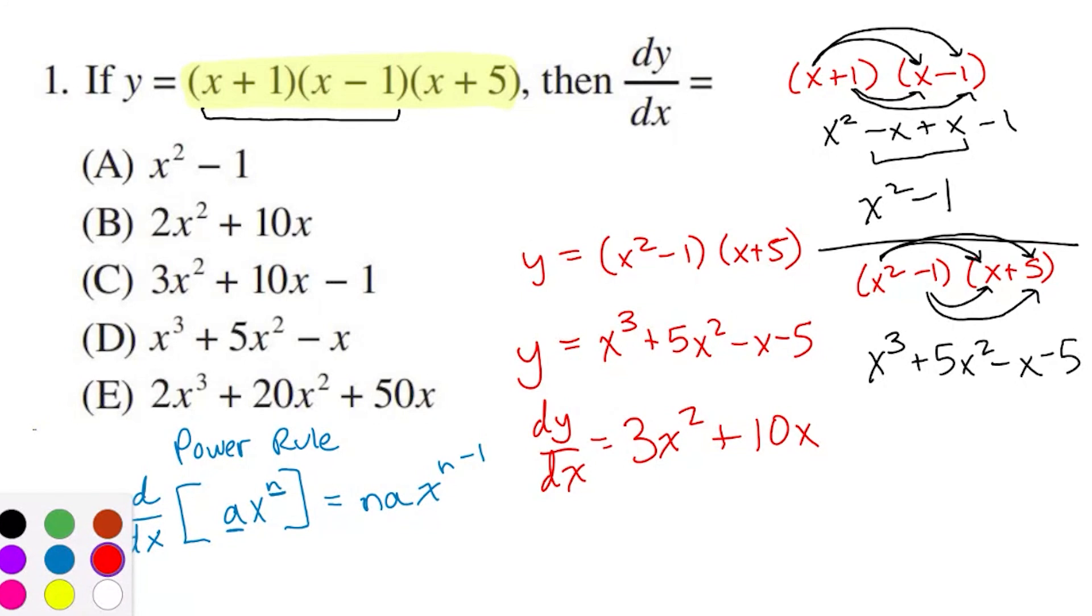On the next term, we've got minus x. Now there is an implied negative 1 here. So even though there's also an implied exponent of 1 here, so if I bring down that 1, it's still negative 1 times 1. So my coefficient is still going to be negative 1, but then I've got to decrease the exponent by 1, 1 minus 1 is 0, and x to the 0th power is just 1.